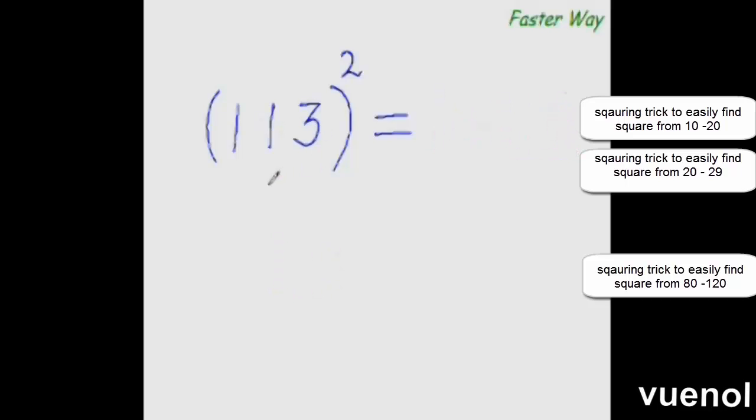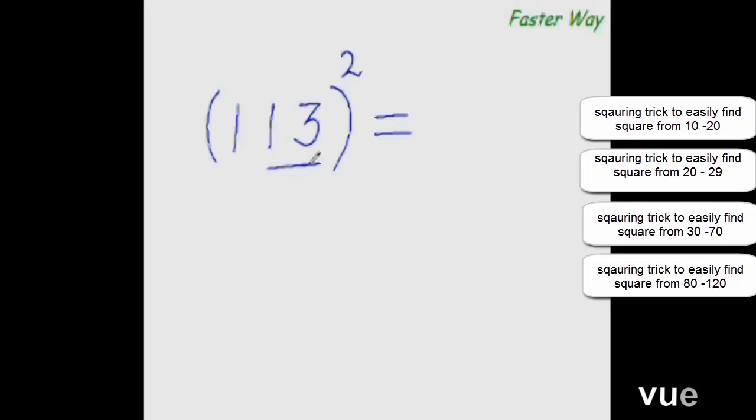So now you find out what would be 113 square. Now once again add this 13, that is distance from the base 100, to this entire number. So 13 plus 113 is 126. These are the first three digits of your answer.